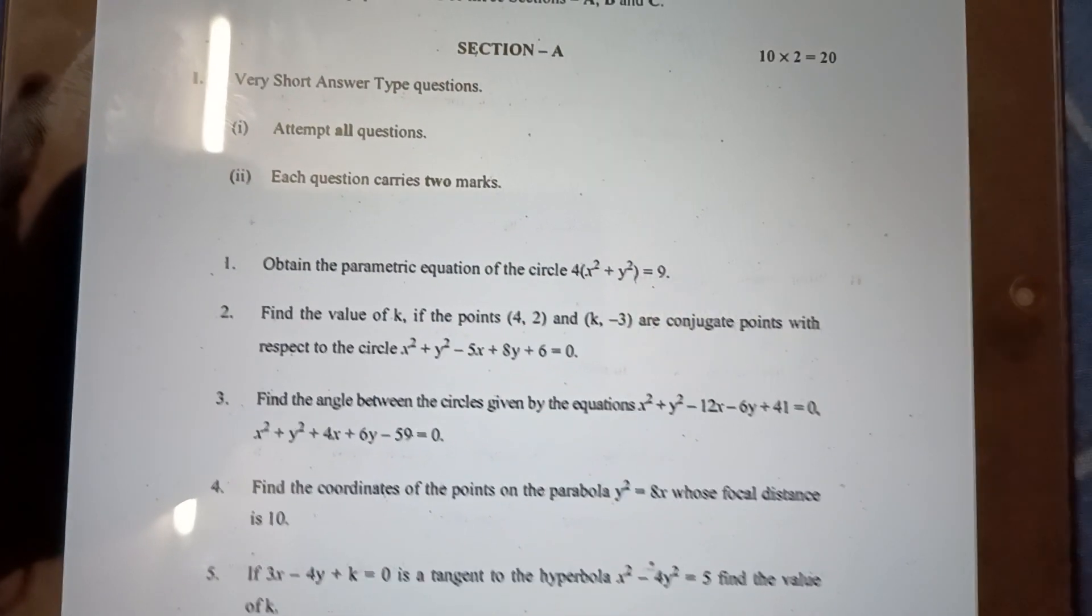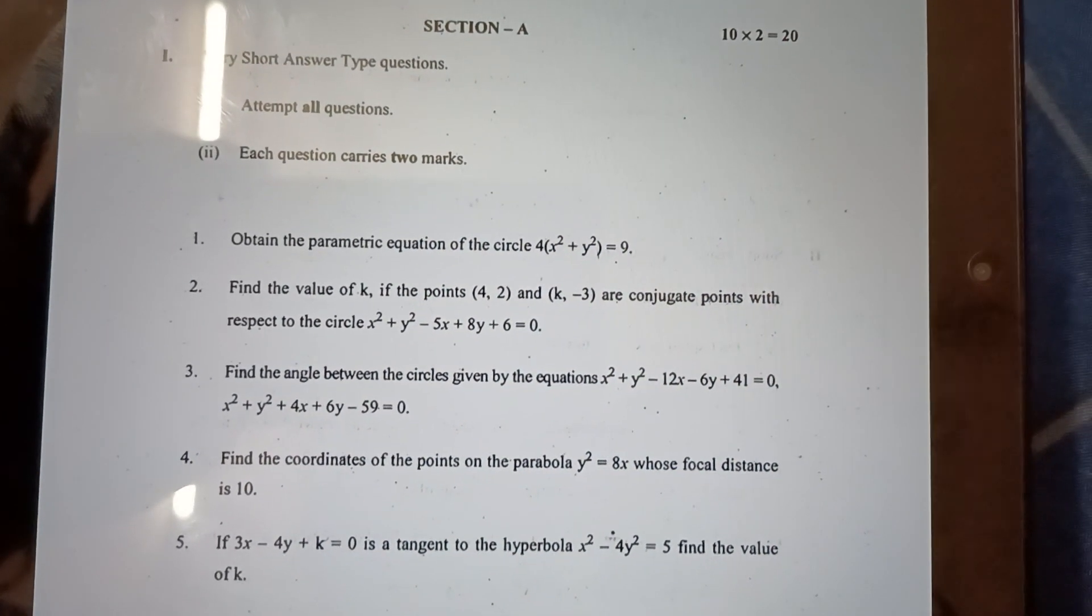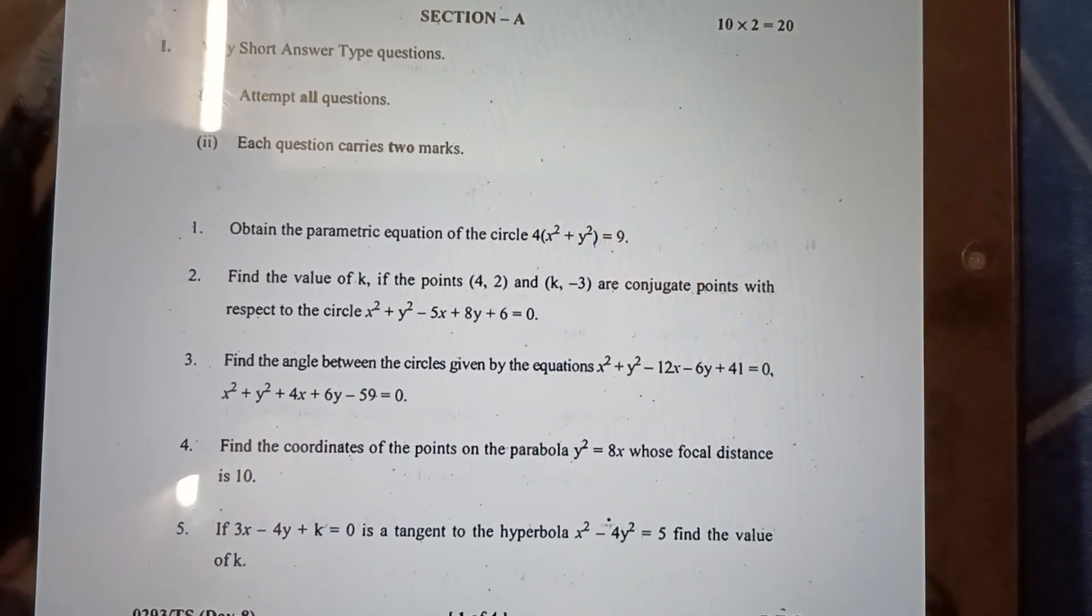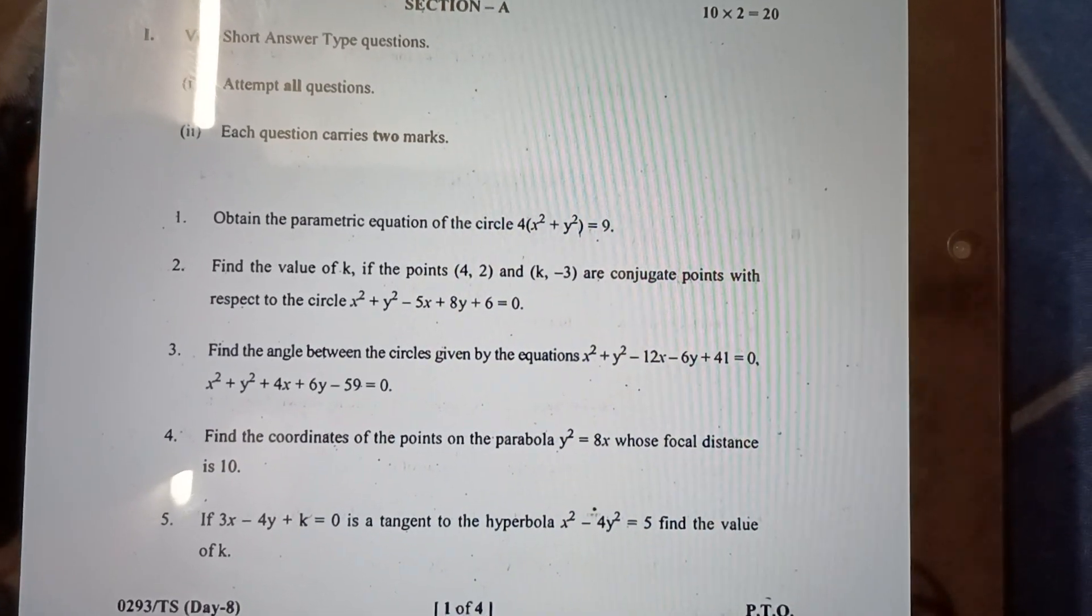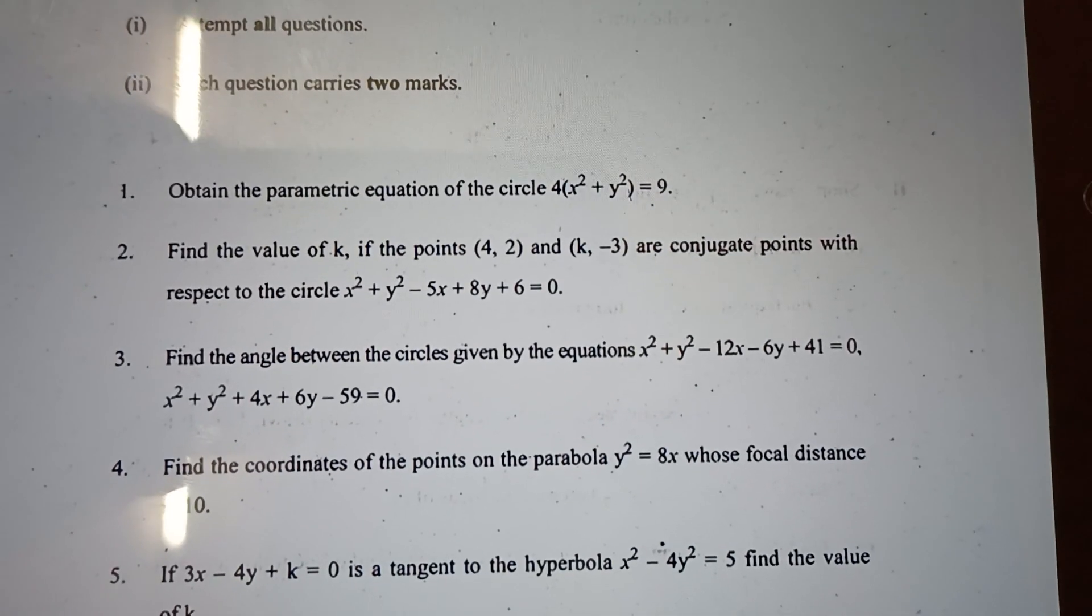First question: Obtain the parametric equation of the circle 4(x² + y²) = 9. Next, find the value of k if the points (4, 2) and (k, -3) are conjugate points with respect to the circle x² + y² - yx + 8y + 6 = 0.